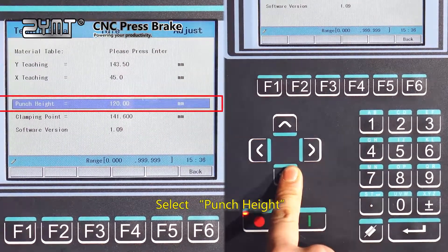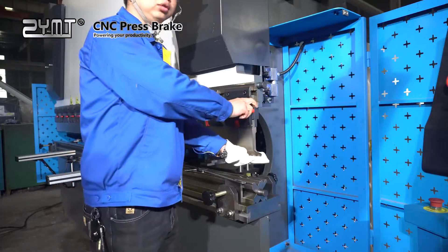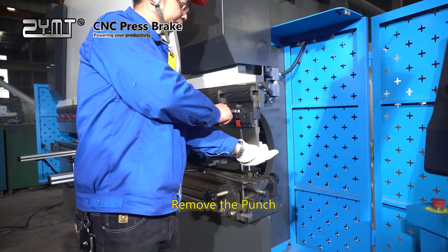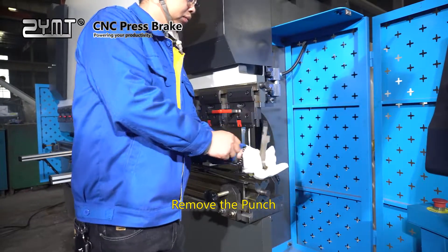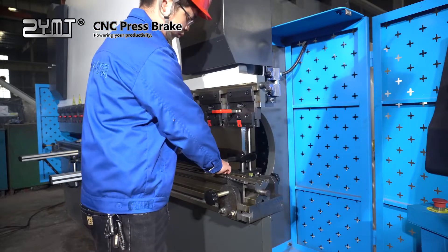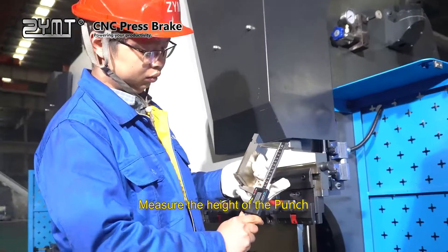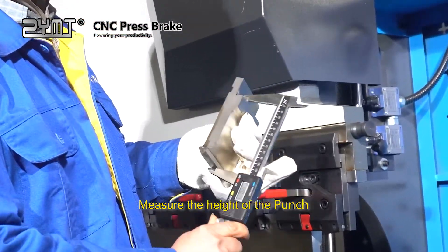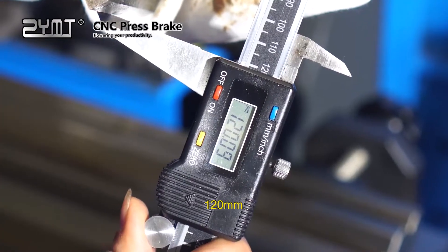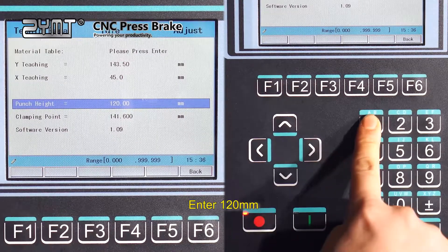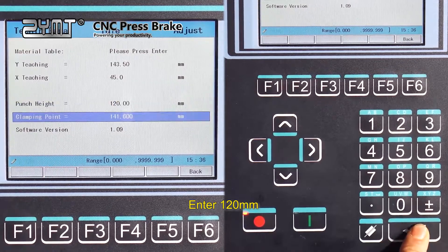Select punch height. Remove the punch. Measure the height of the punch. 120mm. Enter 120mm.